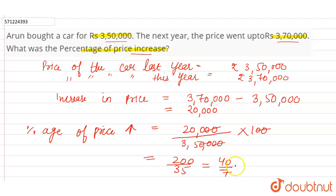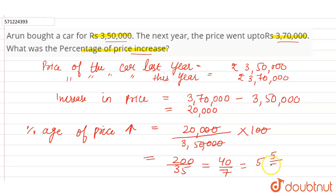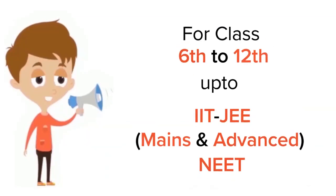So the percentage increase is 40/7. Converting this fraction into a mixed fraction: 7 into 5 is 35, so 5 is the quotient and 5 is the remainder. Therefore, the percentage increase in the price of the car is 5 and 5/7 percent.